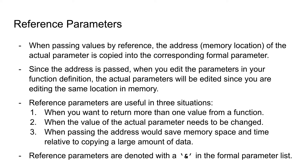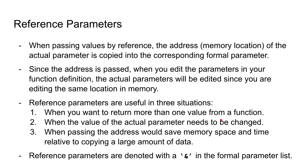So where would we use reference parameters? We would use them when we want to return more than one value from a function, when the actual parameter needs to be changed, or when passing the address would save memory space and time relative to copying a large amount of data. Pretty much when we want to return more than one value or multiple data types from a function, or when an actual parameter needs to be changed while the return value is being calculated.